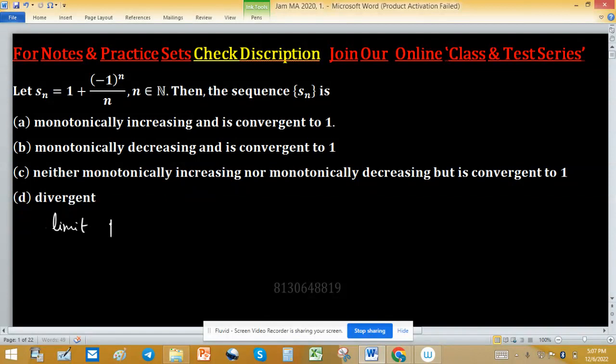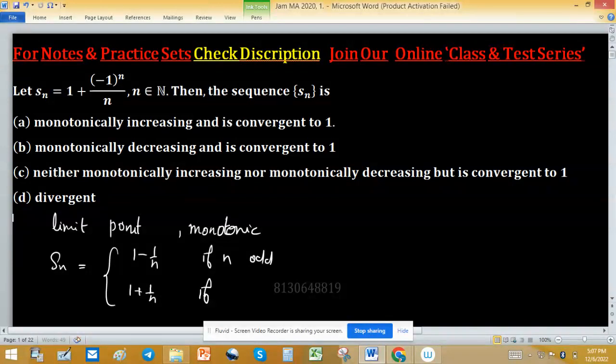What is the limit point of this sequence? Second is monotonic nature. We can write the sequence in its split form: 1 minus 1 over n when n is odd, and second is 1 plus 1 over n when n is even.